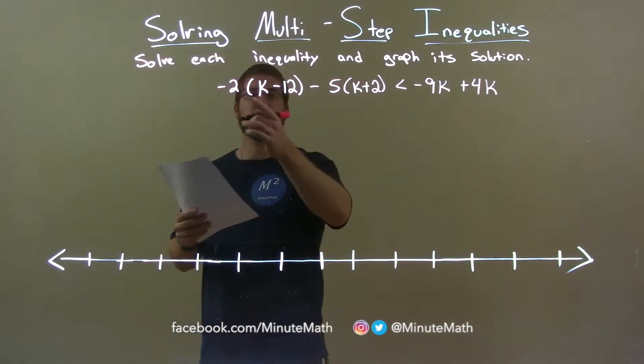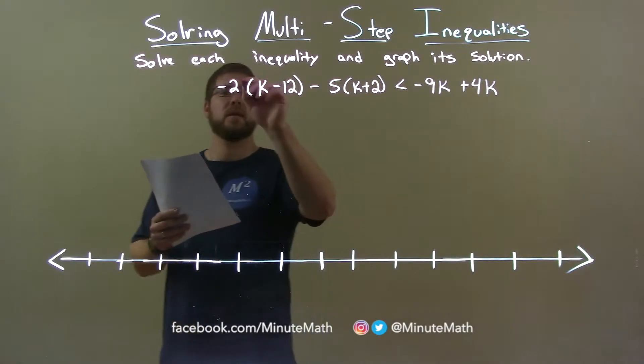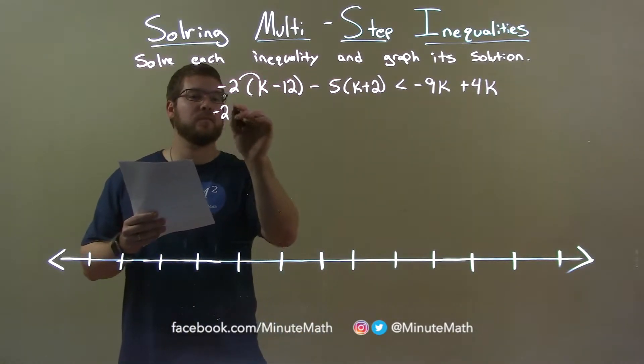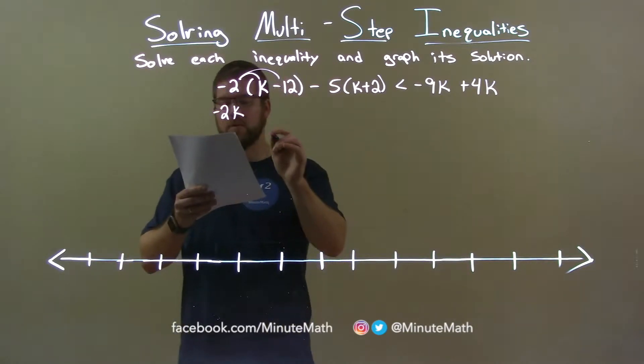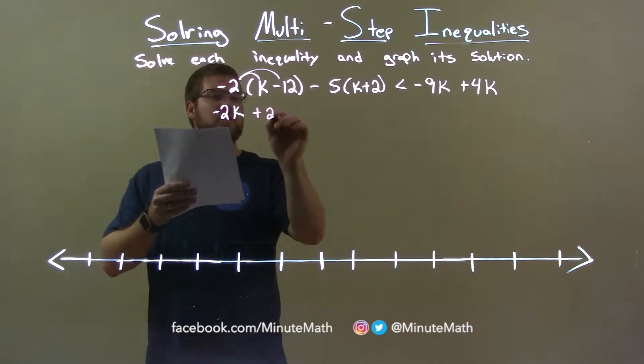Well, first thing I'm going to distribute into each parenthesis. Negative 2 times k is negative 2k. Negative 2 times negative 12 is positive 24.